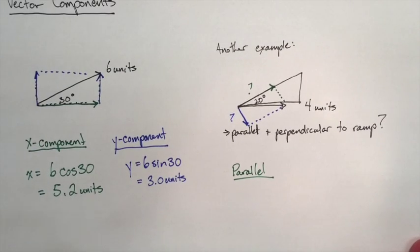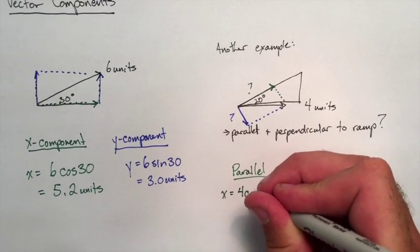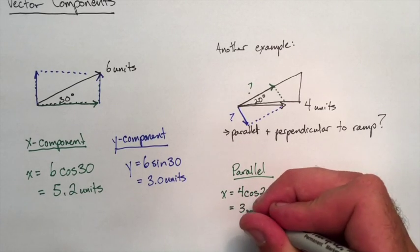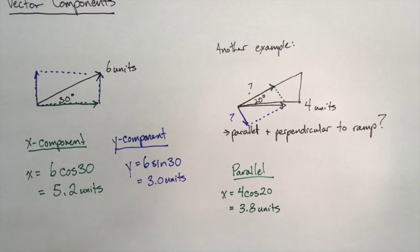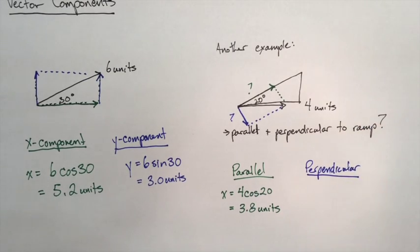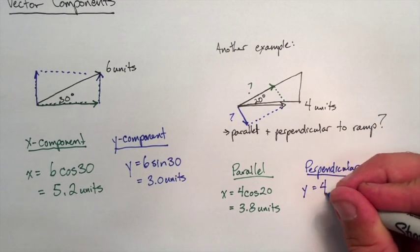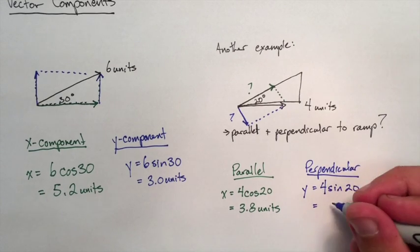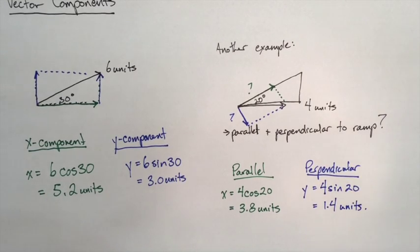The parallel component would just be the adjacent part to that angle. So it's going to be 4 cos 20, so 3.8 units. And then the perpendicular will be the opposite side to that angle, which is going to be 4 sin 20, which is going to be 1.4 units.